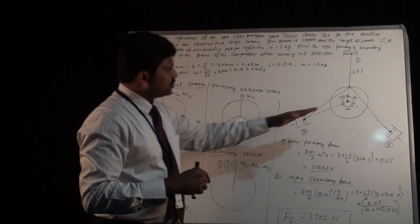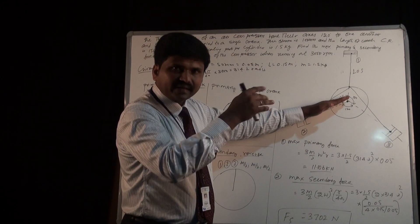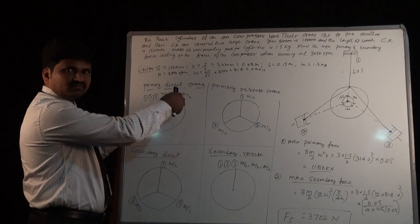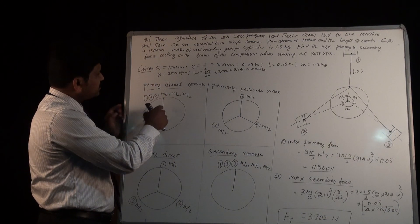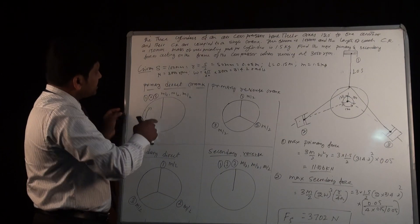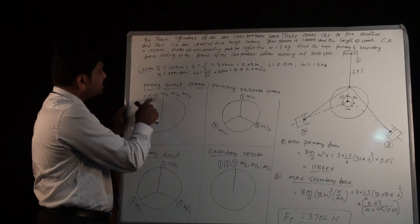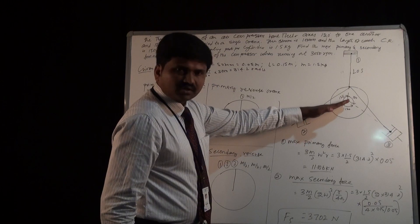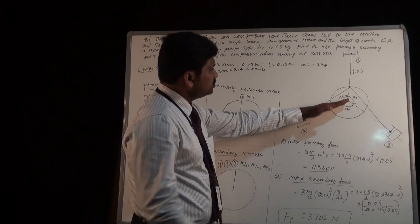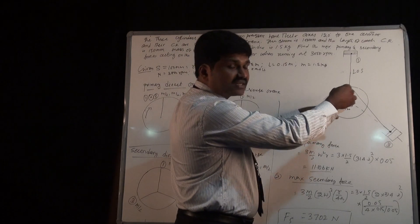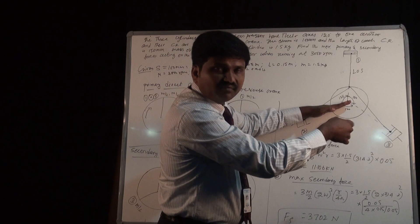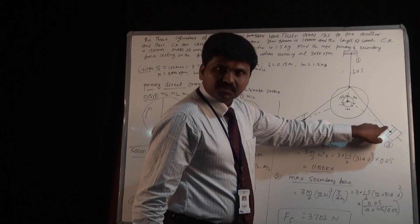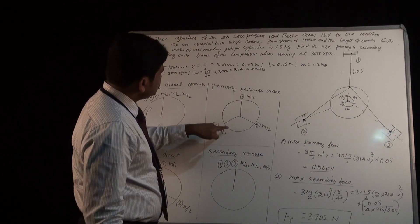From the line of stroke of cylinder 2, if the direct crank is rotated in the clockwise direction by an angle of 120 degrees, then the reverse crank will be at an angle of 120 degrees in the opposite direction — anticlockwise. So the reverse crank of cylinder 2 will come to this position. Half of the mass is placed at the direct crank position, and the remaining half of the mass is placed at the reverse crank position.